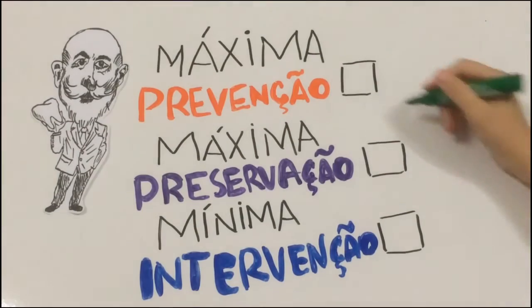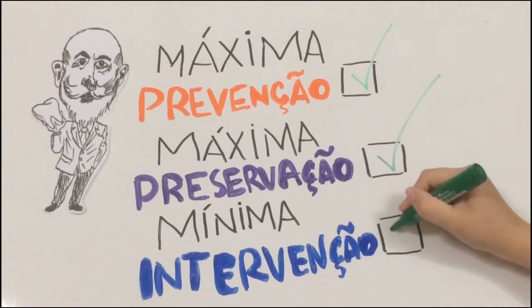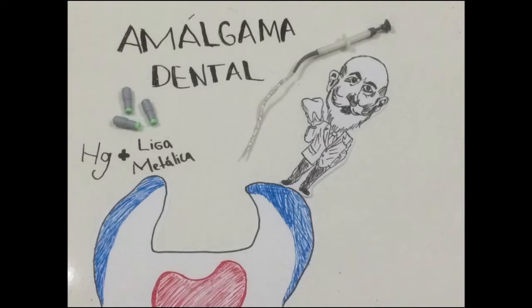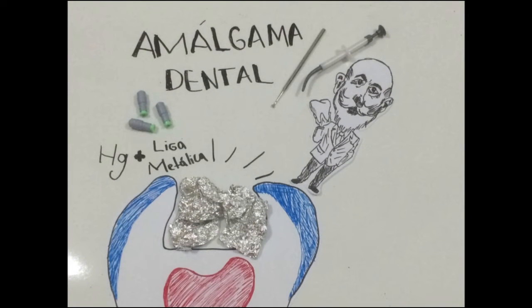Hoje, os conceitos utilizados são máxima prevenção, máxima preservação e mínima intervenção. Black descobriu a melhor composição clínica para o amálgama, tornando-o um material próprio para restaurações. Vale lembrar que o amálgama era o principal material restaurador da época.